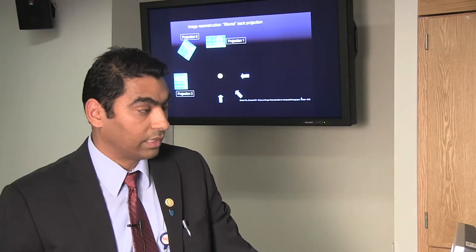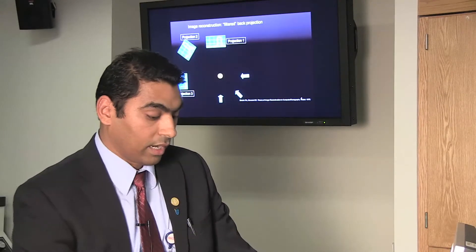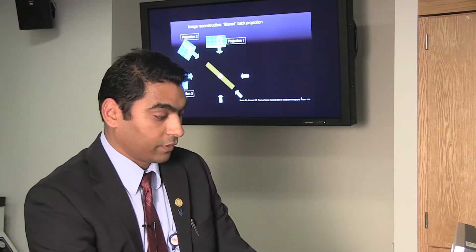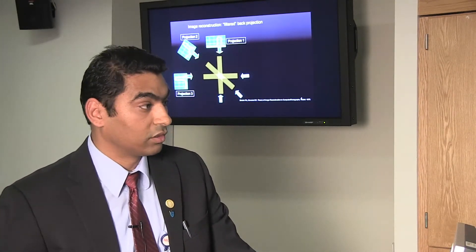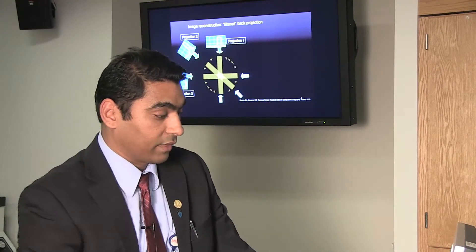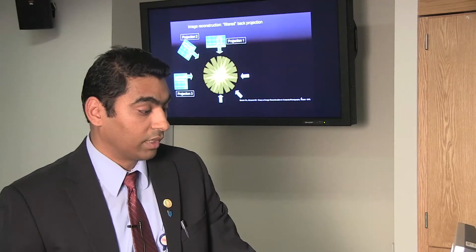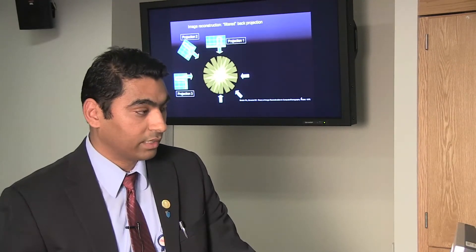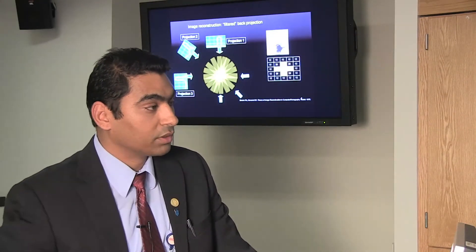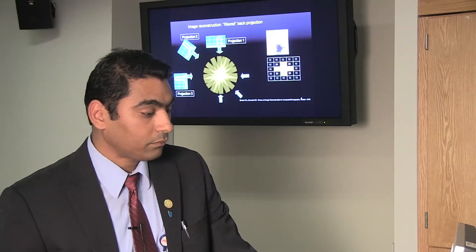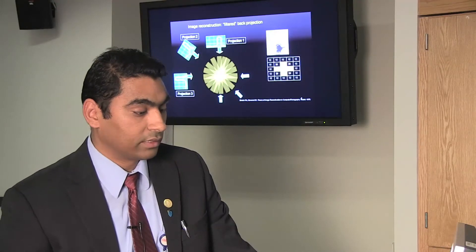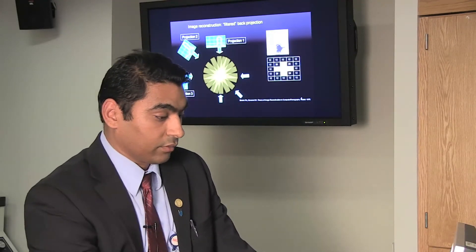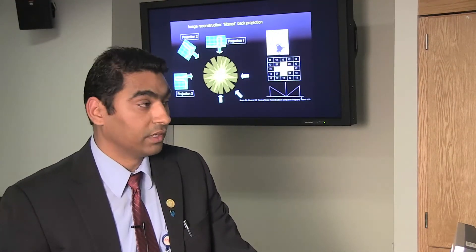Let's start with filtered back projection, the standard conventional technique available on the scanner. We scan a circular central focal bright spot and send x-rays from three different angles. We collect raw data in the detector domain and back project this raw data to the image domain. When projected from three different projections, this circular spot is no longer a circle but almost like a star — a common star-shaped artifact seen all the way back to 1975. The central pixels will be brighter and the peripheral ones less, so we need a filter to compensate for this effect — hence the name filtered back projection.